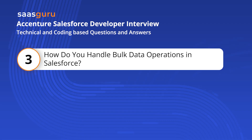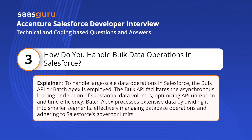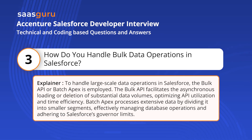Question 3: How do you handle bulk data operations in Salesforce? To handle large-scale data operations in Salesforce, the Bulk API or Batch Apex is employed. The Bulk API facilitates the asynchronous loading or deletion of substantial data volumes, optimizing API utilization and time efficiency. Batch Apex processes extensive data by dividing it into smaller segments, effectively managing database operations and adhering to Salesforce's governor limits.